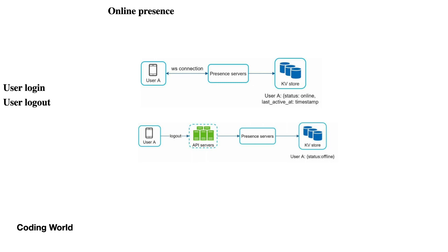For online presence, there are four scenarios: user login, user logout, user is offline, and user is online. When a user logs in, it updates its status as online and stores the last active timestamp in the key-value store. Whenever any other user checks whether this user is logged in, they query the key-value store and check the status. When a user logs out, we call the presence API on the presence server and update the entry from logged-in to logged-out.